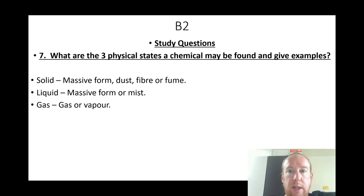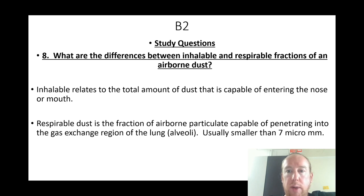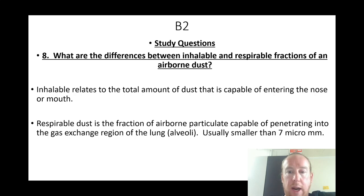What are the three physical states a chemical may be found in, with examples? Solid: massive form like dust, fibre, or fume. Liquid: massive form or mist. Gas: gas or vapour. What are the differences between inhalable and respirable fractions of airborne dust? Inhalable relates to the total amount of dust capable of entering the nose or mouth; respirable dust is the fraction capable of penetrating into the alveoli — smaller than 7 micrometres.